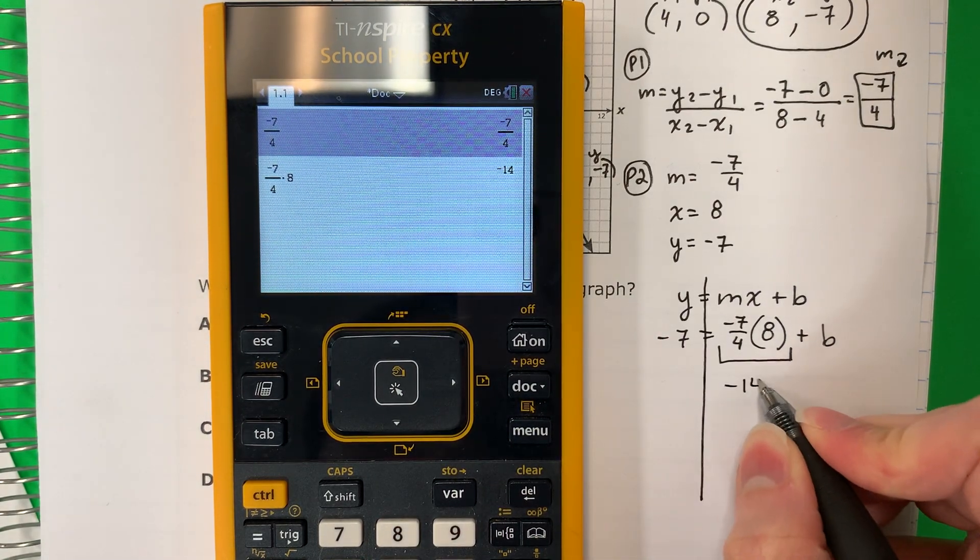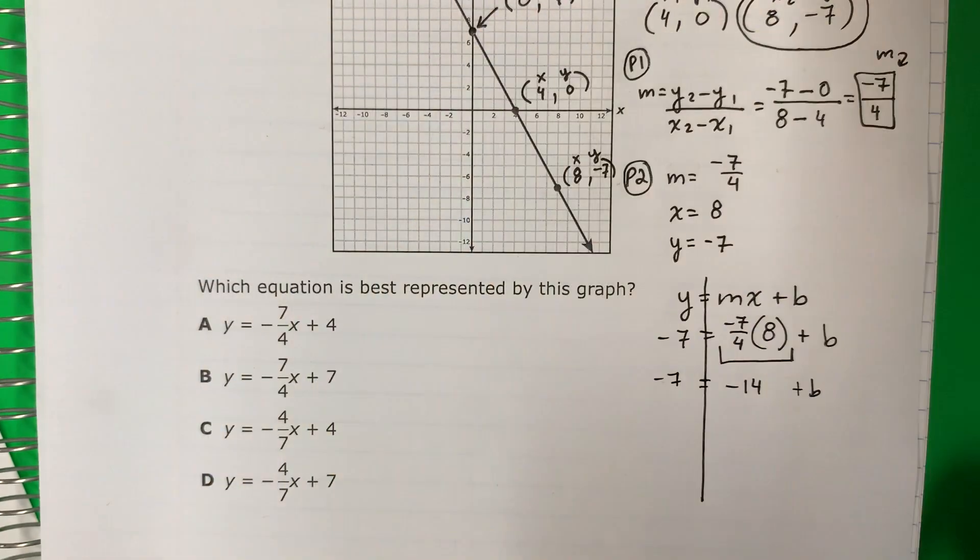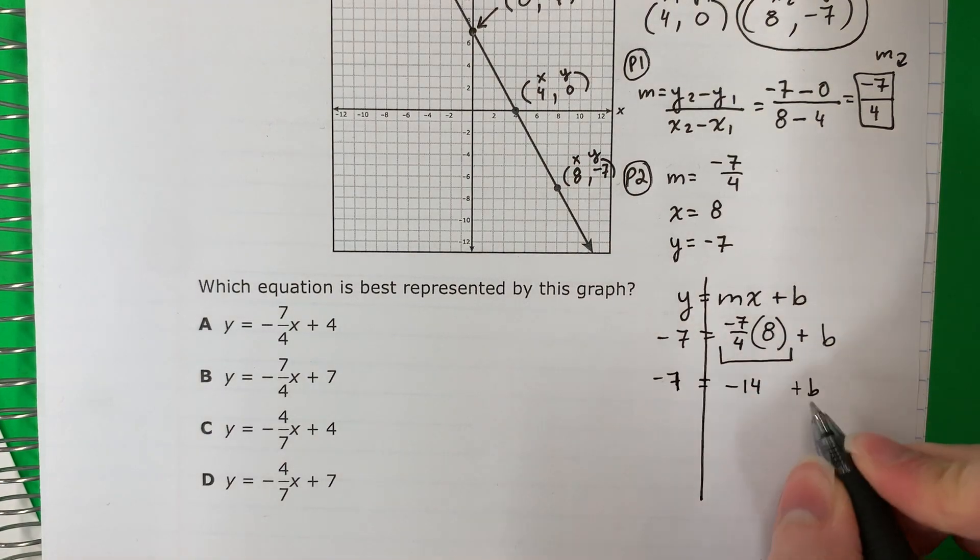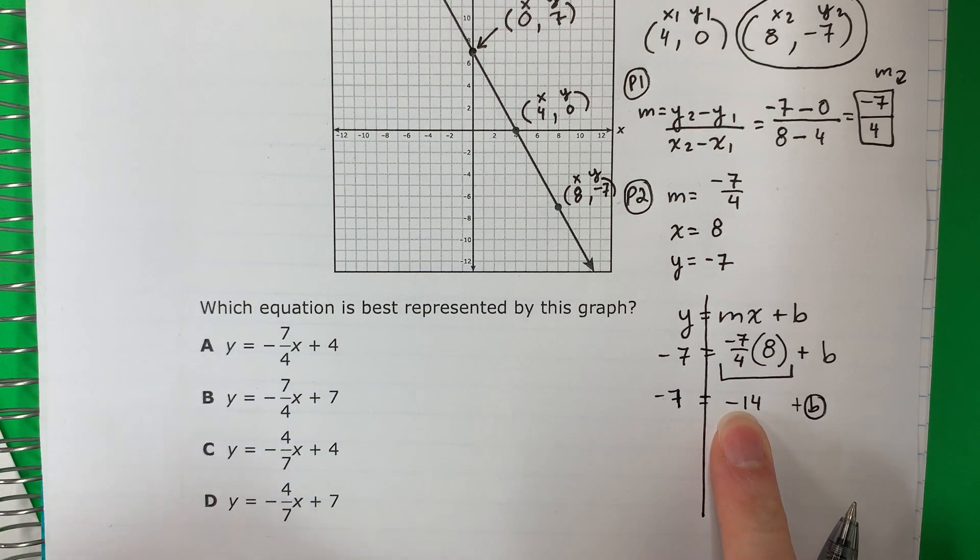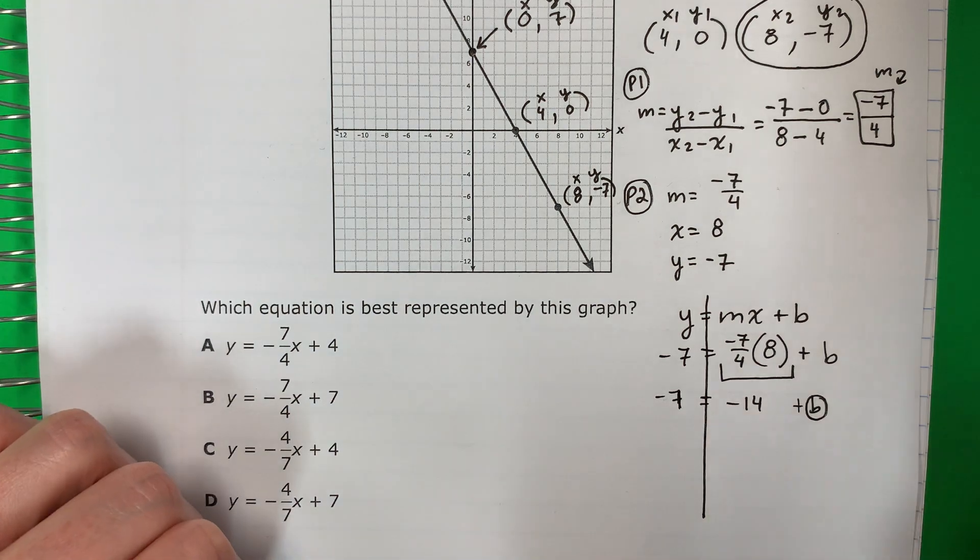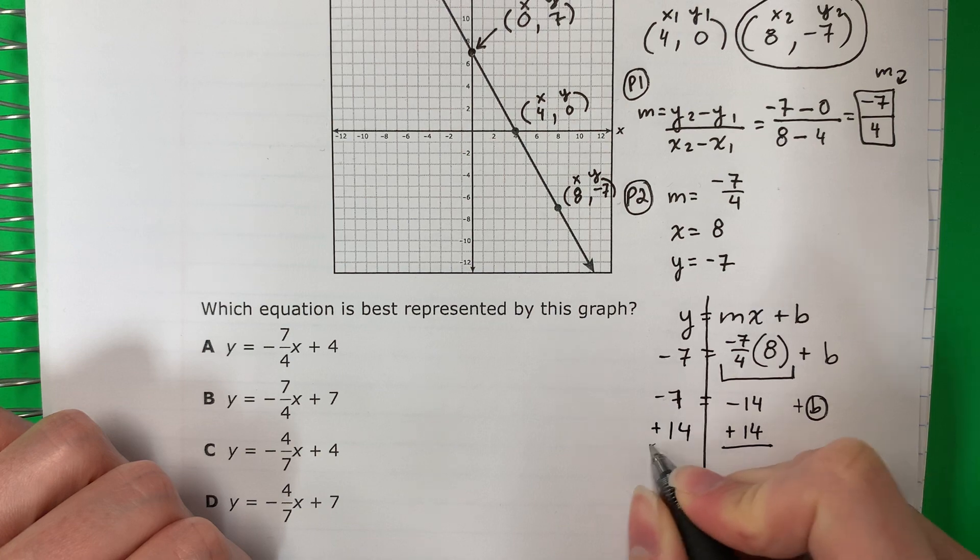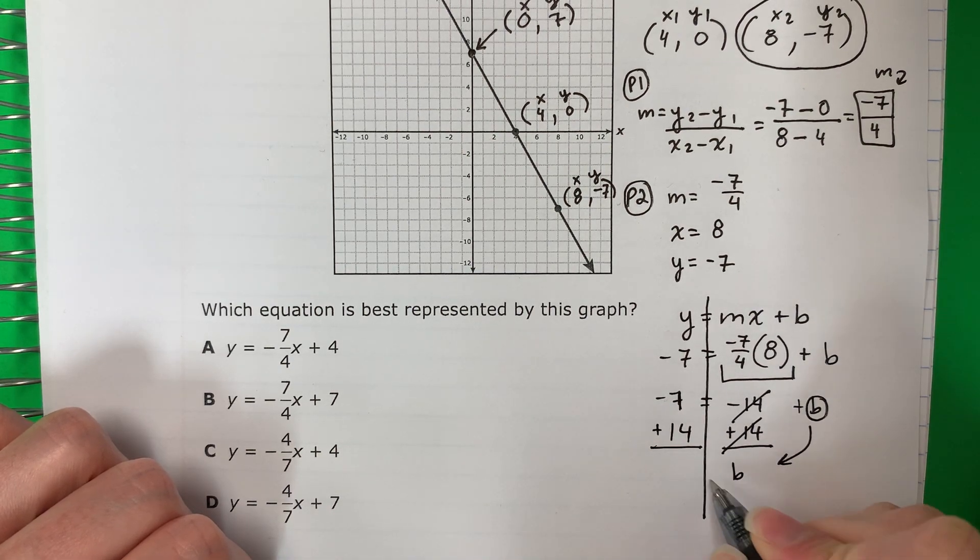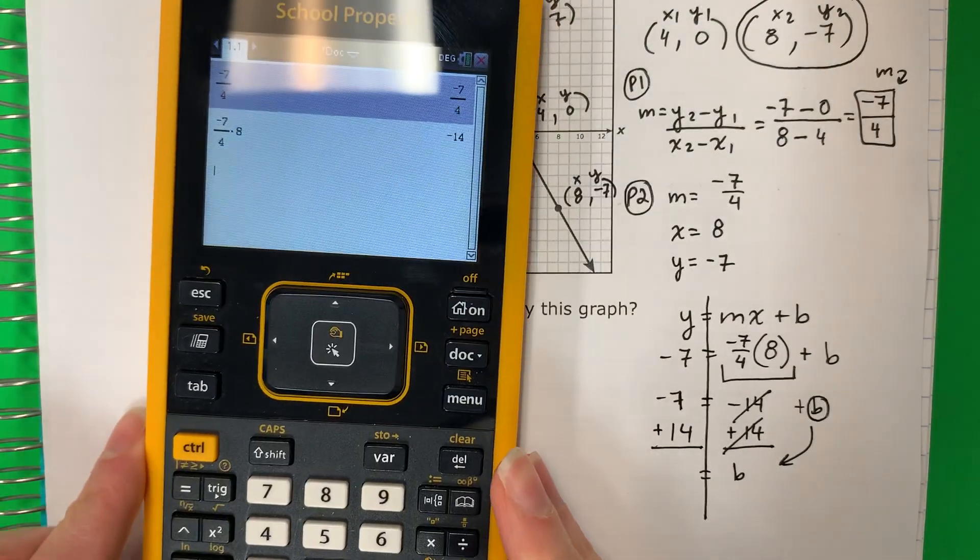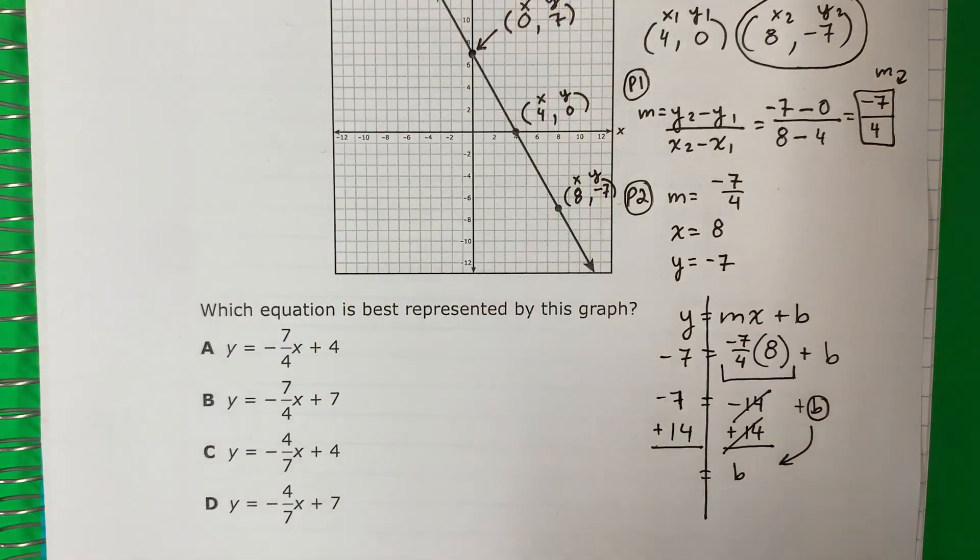That is negative 14. Copy plus B equals copy negative seven. I want the B alone. What is with B? Negative 14. I need to move that. It's minus. The opposite of minus is plus. So plus 14. Copy plus 14. This cancels. It's zero. Copy down B equals. Let's put negative seven plus 14.